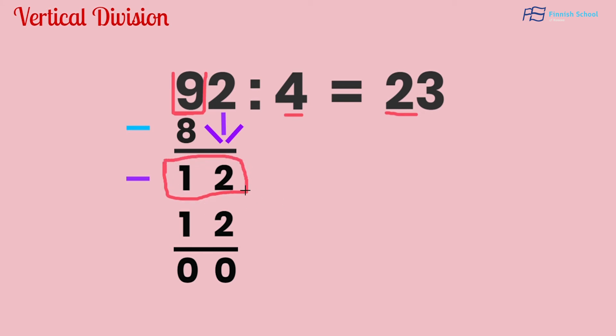12 divided by 4—we know that it's 3 because 3 times 4 is 12.